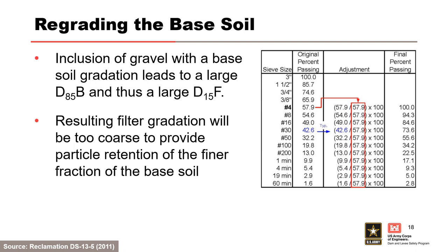Re-grading is performed on the number 4 sieve so that the maximum particle size of the re-graded base soil is 4.75 millimeters. During the re-grading process, a correction factor is calculated by dividing 100 by the percentage passing the number 4 sieve. The correction factor is multiplied by the percentage passing of each sieve size of the base soil smaller than the number 4 sieve, with the new values of percent passing being the re-graded base soil.